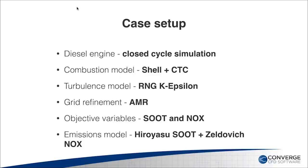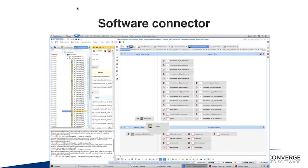Let me continue with the CFD model setup. For the baseline CFD model, we are taking a simple case: a closed-cycle simulation considering a single sector of the domain for computational efficiency. We use simplified combustion and emission models, along with adaptive mesh refinement, to create a model that can be simulated in a short amount of time. For this particular study, we ran around 40 simulations and wanted a quick turnaround time. Once the parametric CAD model and the baseline CFD files are ready, we add them inside the software connector framework of CASES. The software connector establishes the connection between CASES and Converge through control scripts.